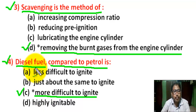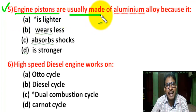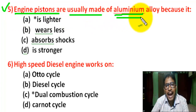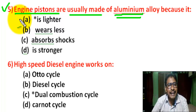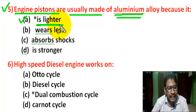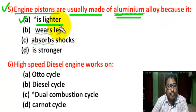Also, in a diesel engine there is no spark plug to ignite the fuel. Question number 5: Engine pistons are usually made of aluminium alloy because — there are four options. Correct answer is A — it is lighter in weight. Aluminium alloys are now most commonly used as they are lighter in weight and good conductors of heat.